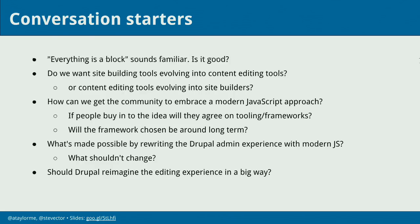Question: Are they going to introduce content types other than post and page? WordPress already has more than post and page out of the box. Post and page are what come out of the box — like Drupal has page and article — but you can create custom ones. That's been in WordPress for many years. It's one of the reasons an agency I was working with actually adopted WordPress, because now we could create types for team bio pages, testimonials, or whatever we wanted to do.